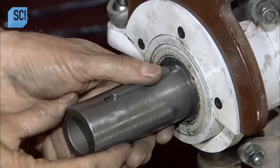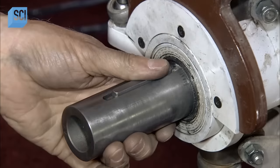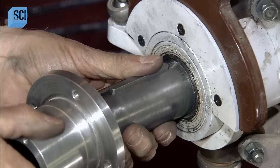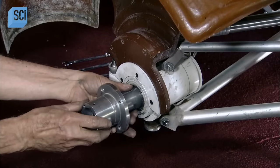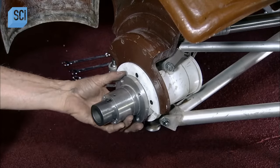They insert a locking mechanism in a slit at the end of the drive shaft and slide the wheel hub onto the shaft. They turn the hub to lock it in place.